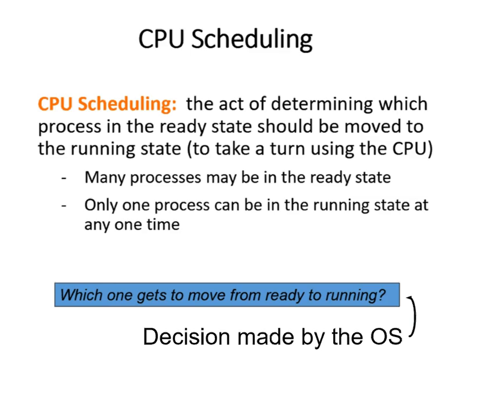CPU scheduling: the act of determining which process in the ready state should be moved to the running state to take its turn using the CPU. Many processes may be in the ready state, but only one process can be in the running state at one time. So which one gets to move from ready to running? That's a decision for the operating system.